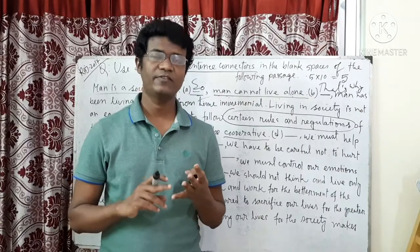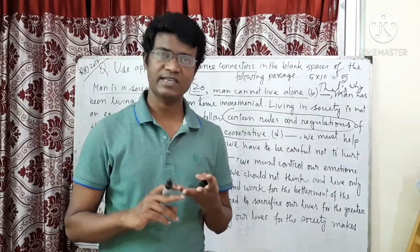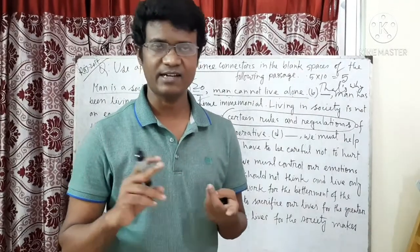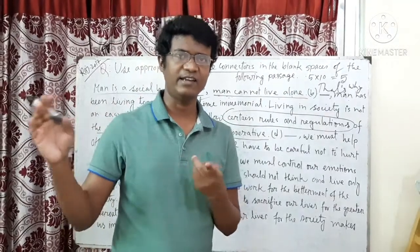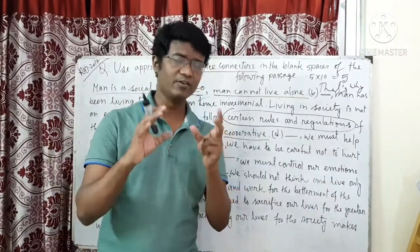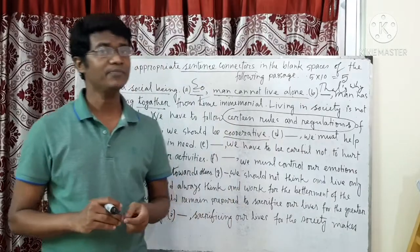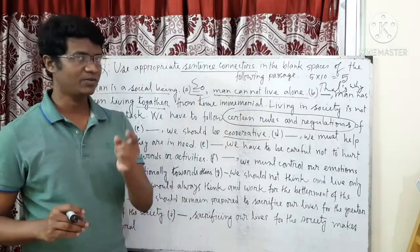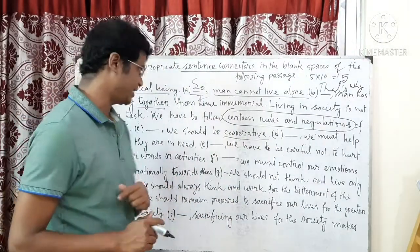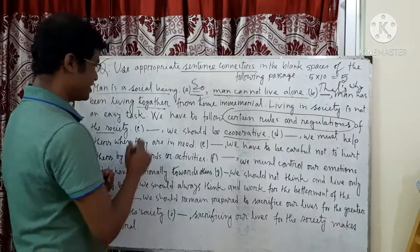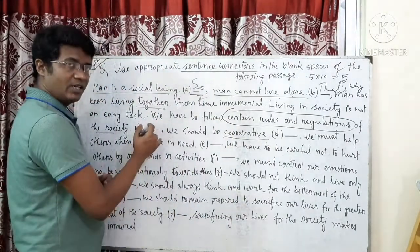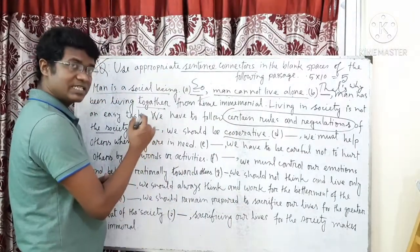The connectors for chronological sequence are: first, second, third, finally, lastly. These are the same type of connectors used to list items in order — this is called the chronological sequence.